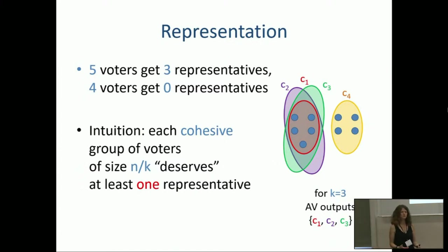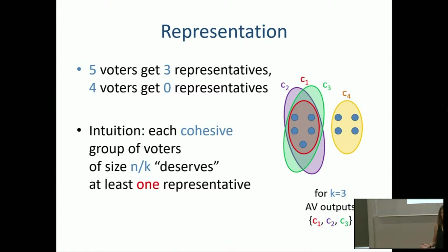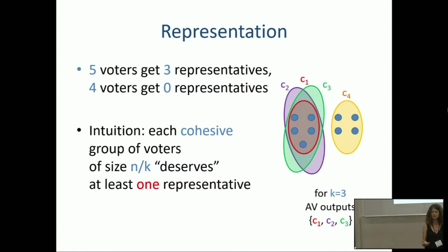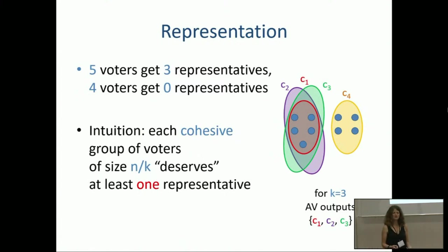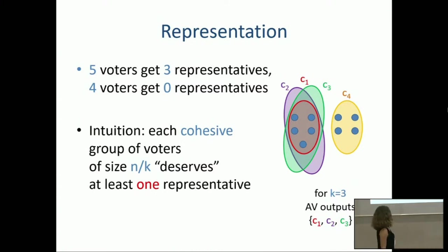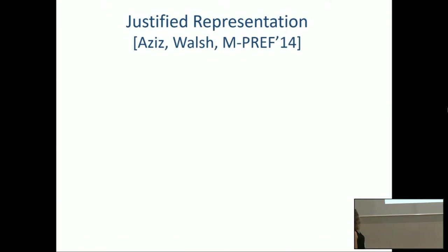Now, in what sense does a group of size N/K deserve anything? If this group has very diverse preferences, there's no way to make that group happy — arguably they're not even a group. For a group to deserve something, I would argue it should be at least somewhat cohesive, have some agreement. The simplest way to define cohesive is to say we want to guarantee something to groups of voters that agree on a specific candidate.